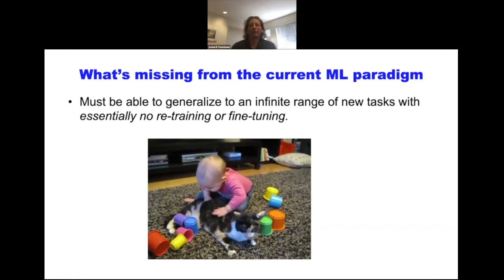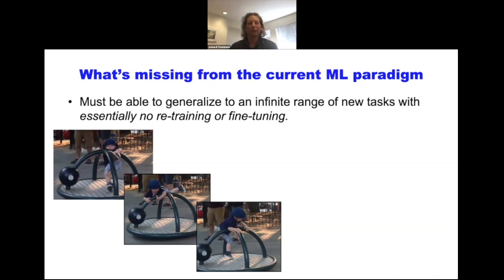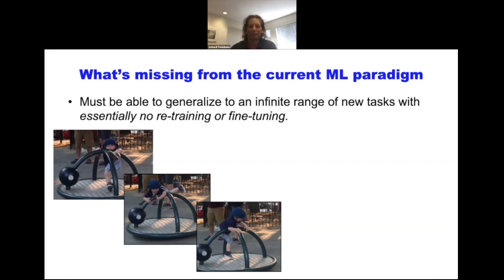Here are snapshots from a toddler of my acquaintance — at the time about 20 months old. Here he is on the playground using it not for the intended purpose: this is a thing you're supposed to spin around, but he decides to use it for climbing, in a really creative way that none of our robots are currently able to do. Maybe with extensive training in simulation you could get a robot to do this kind of thing, but he just did it right off the bat.